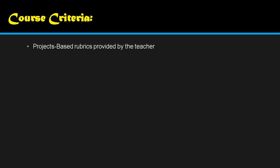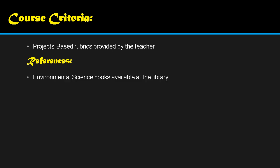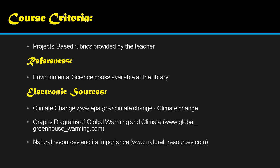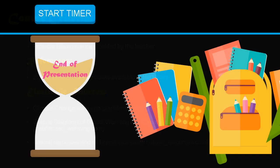For our project-based rubric, I will provide this and pass it in our Facebook group. For references, an Environmental Science book is available at the library which you may use as your reference when you visit DIMSUM MLUC. You also have a lot of electronic sources and resources you may browse online. This is the end of our presentation — please like and subscribe to our video, don't forget to click the notification bell below. See you in my next class, goodbye!